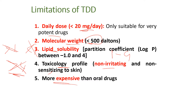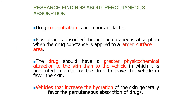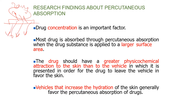While developing a transdermal drug delivery system, researchers found that drug concentration is very important. We need to increase the amount of drug in the patch as much as possible, up to the 20 mg limit. By increasing the drug amount inside the patch, diffusion from the patch through the skin will increase — diffusion happens from high to low concentration, and if the concentration difference is greater, diffusion rate will be higher. We should also apply the patch or cream over a larger surface area of skin, because the larger the surface area, the higher the rate of diffusion and absorption.